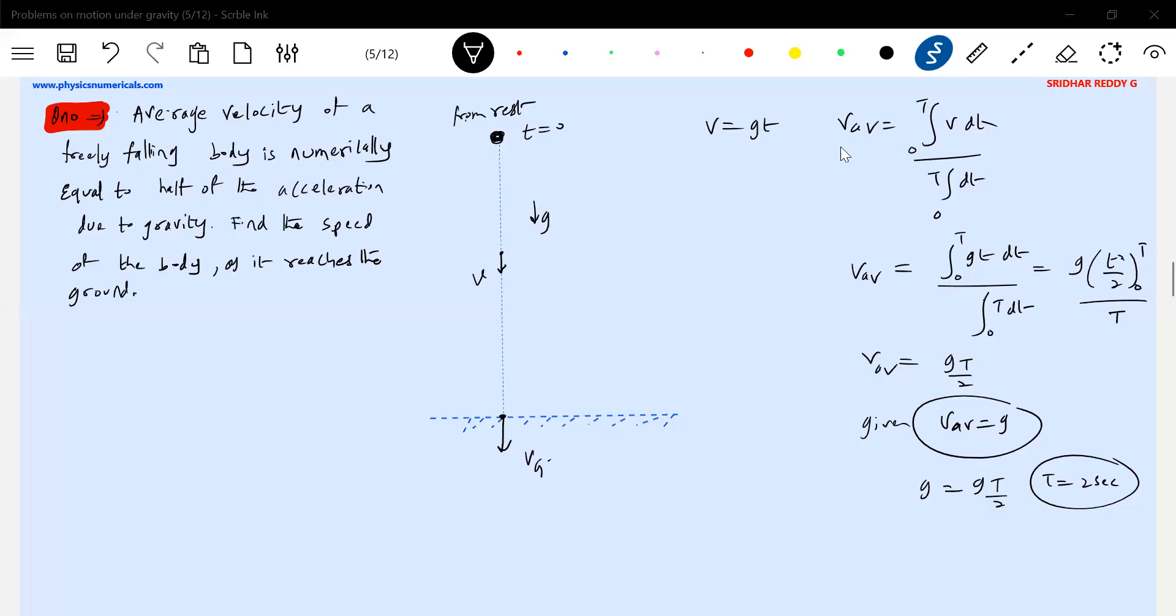Okay, the average velocity of the body is equal to half of the acceleration due to gravity. There's this half I didn't account for initially. This is the given condition. So t equals one second.